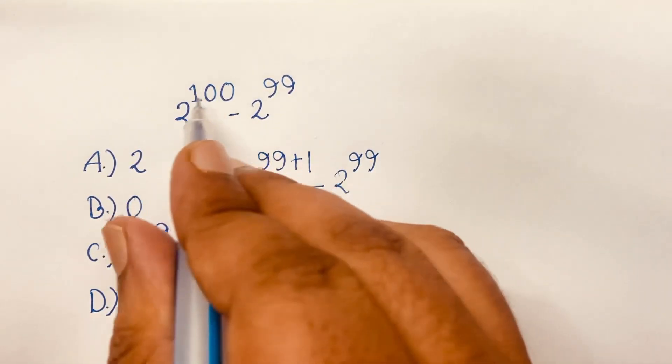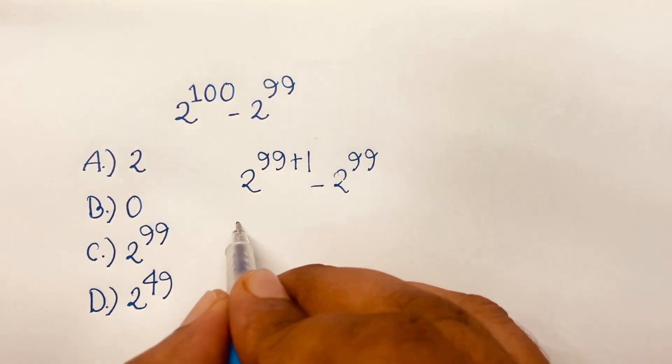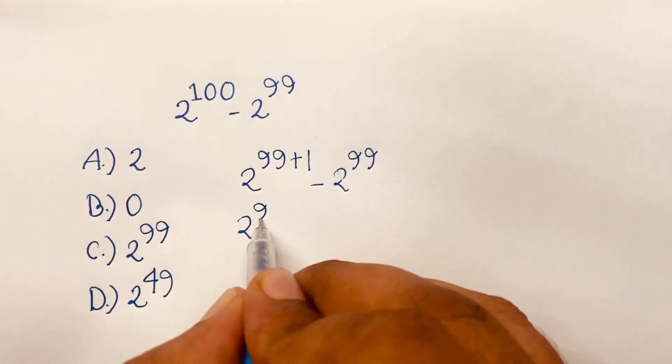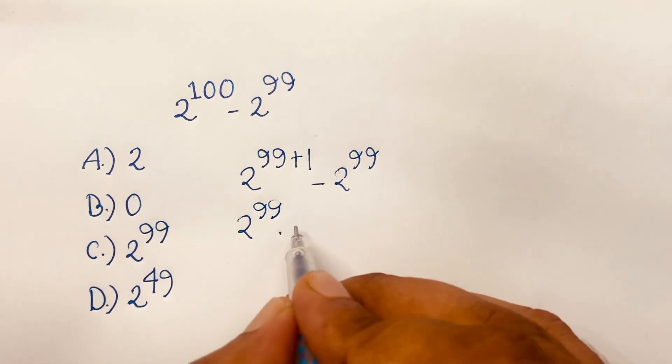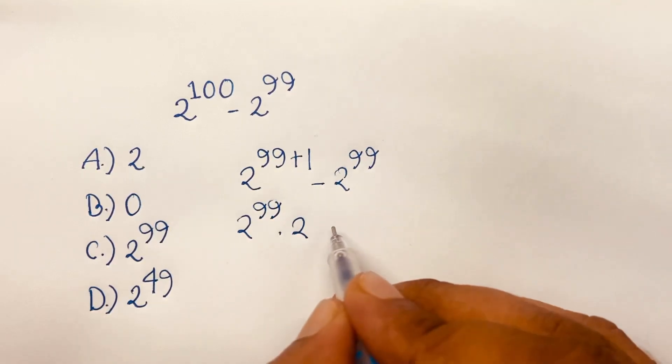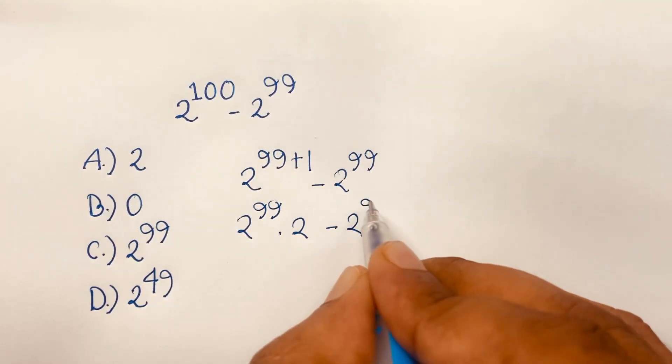Then I can say it will be 2 to the power 99 times 2 to the power 1 minus 2 to the power 99.